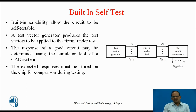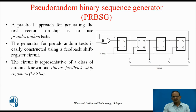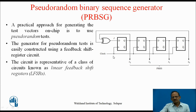Now, we will see how to generate the test vectors. This is a pseudo-random binary sequence generator. One practical approach for generating the test vectors on chip is by using a pseudo-random test generator, which can be easily constructed using a feedback shift register circuit. One possible arrangement is shown here. The output of the 4th stage and the 1st stage are fed back to inputs through an XOR gate, which generates 15 different patterns. This circuit is a representative of a class of circuits known as linear feedback shift register.